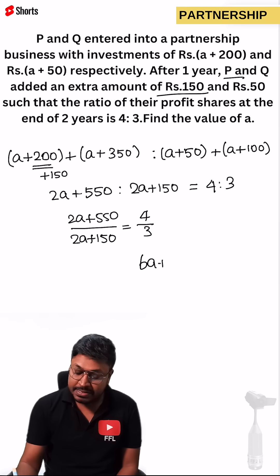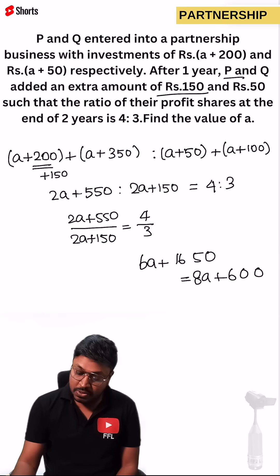So 6A plus 1650 is equals to 8A plus 600. So 8A minus 6A will be 2A is equals to 1050. So A is equals to 525.